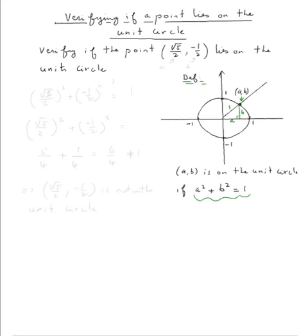So in this case, this is our a, and this is the b. So all we need to check if square root of five over two squared plus negative one half squared, we need to check if this equals one.